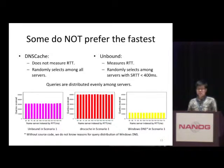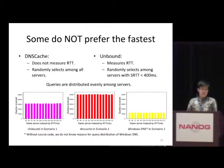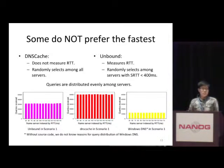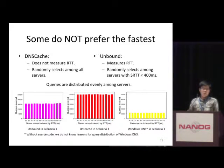We also found some caching resolvers that do not prefer the fastest name server, like Unbound, DNS Cache, and Windows DNS. The reasons differ. For DNS Cache, since it doesn't measure the round-trip time of queries, it has no idea which one is better, so it uniformly distributes queries to all name servers. For Unbound, it does measure the round-trip time of each name server, but uses it as an upper bound for name server selection — it only selects name servers with round-trip time less than 400 milliseconds and distributes queries uniformly. For Windows DNS, as we don't have its source code, we don't know the detailed reason.